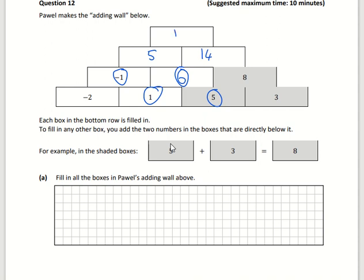And then 5 plus 14 is 19. So that's all for part A.